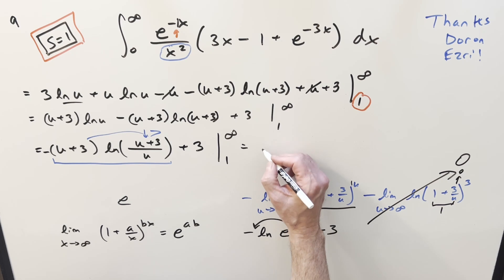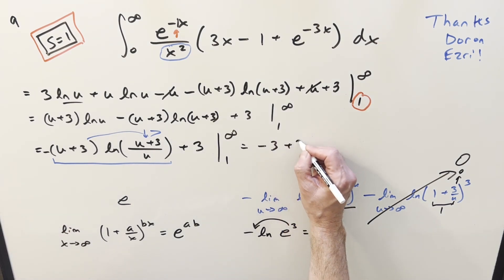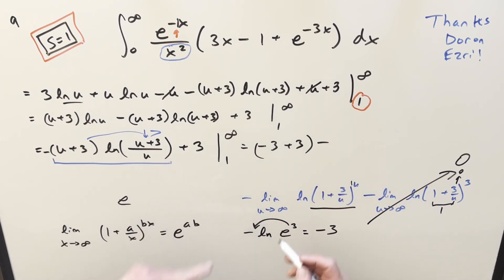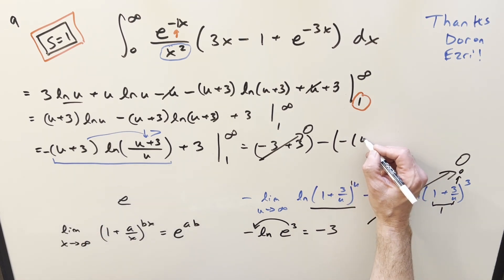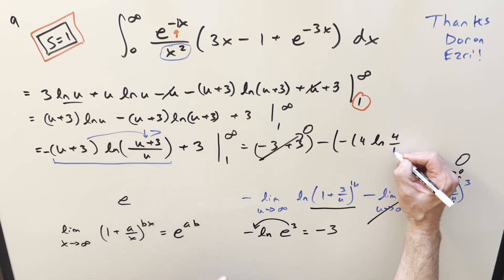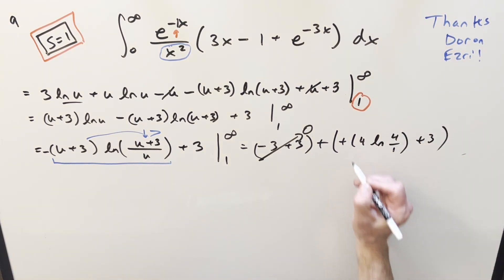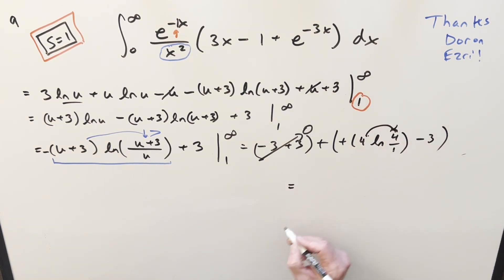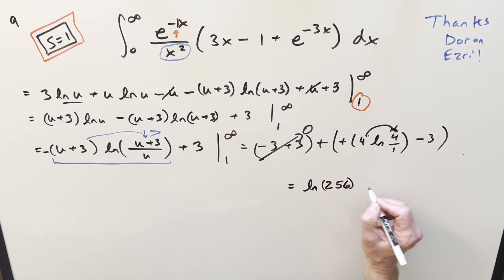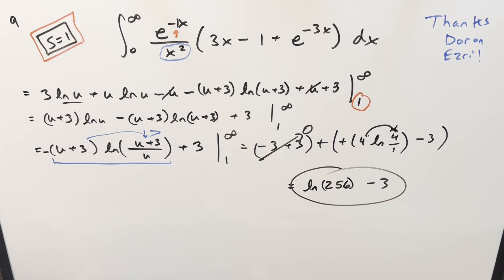Now evaluating at s = 1: the limit at infinity gives 0, so we subtract the value at 1. At u = 1: -(1+3)·ln(4/1) + 3 = -4·ln(4) + 3. With the outer minus sign: 4·ln(4) - 3. Since 4·ln(4) = ln(4⁴) = ln(256), the final answer is ln(256) - 3. It took quite a bit of work, but this Laplace transform method is slightly easier than Feynman's trick used in the other video. Thanks everyone for watching!